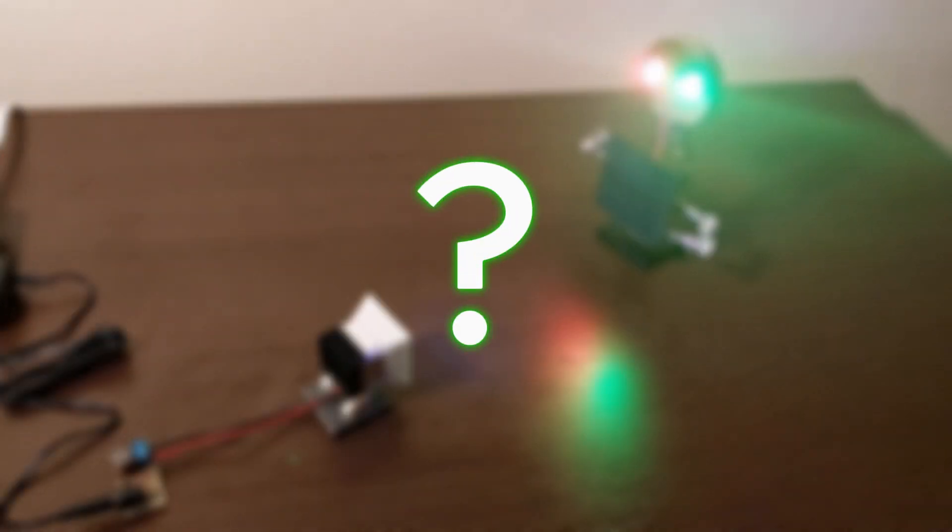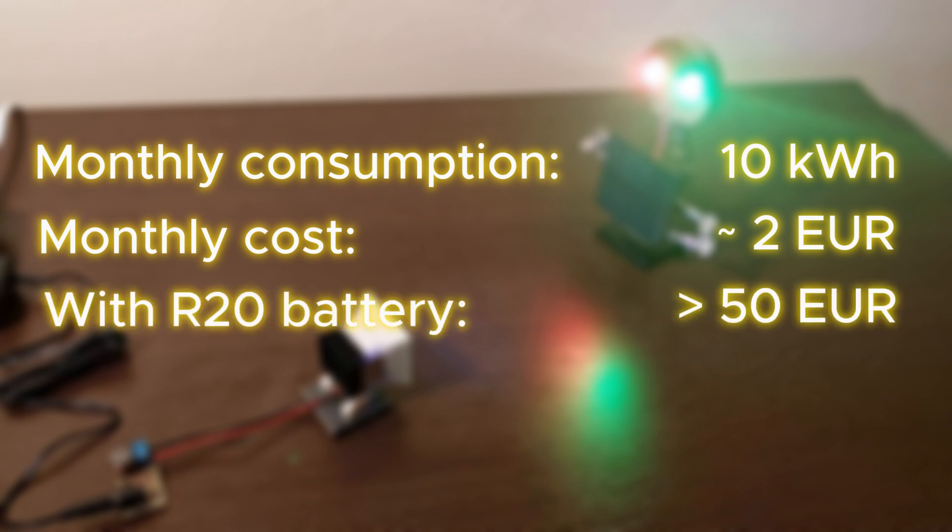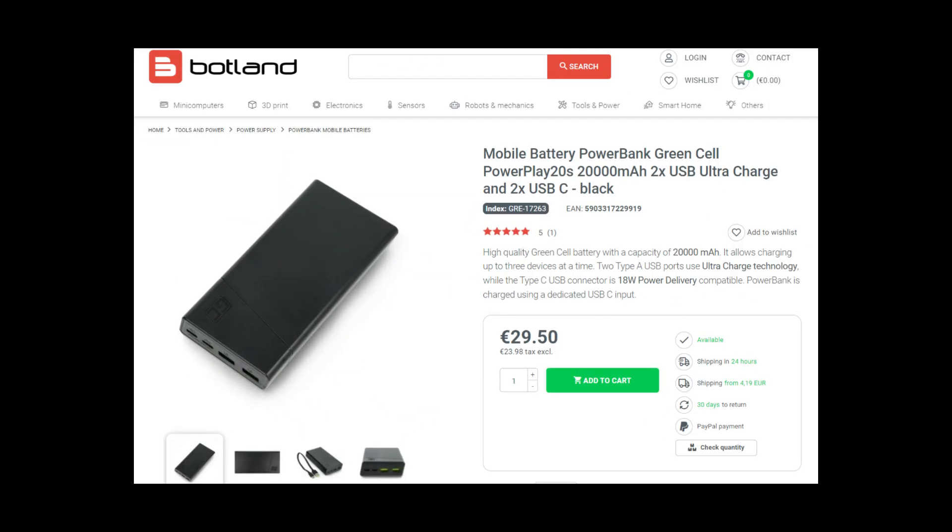So is there a point in using something so inefficient? That's a very good question. Let's see some numbers. 14W consumer will use about 10kWh per month. If we assume 20 cents per kilowatt hour, we get monthly cost of about 2€. Significant, but still acceptable. Especially if you compare it with monthly cost of alkaline batteries for half-watt device working continuously. In case of R20 batteries, it could be more than 50€. But I guess nobody would use alkaline batteries for such application. Powerbank is obviously a better choice. And for the price of such wireless power source, you can easily get 20,000mAh unit, which should be able to provide half-watt for around 8 days.